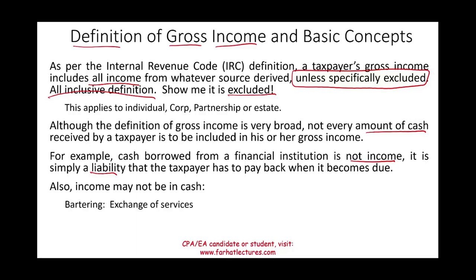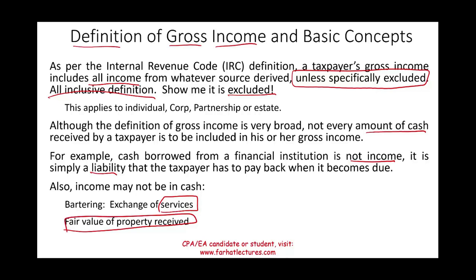An example is bartering — an exchange of services or property. For instance, I am a teacher and I give you two hours of tutoring at $150 per hour, that's $300. You don't have $300 cash, so you give me your old iPhone or paint my house instead — that's the fair value of property or services received. No cash exchanged hands, but I still have to include that value in my gross income.